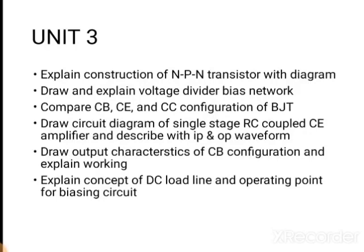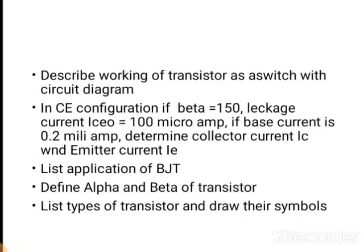Draw output characteristics of common base configuration and explain the working. Explain the concept of DC load line and operating point for a biasing circuit — this is also important. Describe the working of a transistor as a switch with a circuit diagram. For numericals, you may be given the beta value and leakage current value, and asked to find collector current and emitter current. Applications of BJT may be asked for two marks.